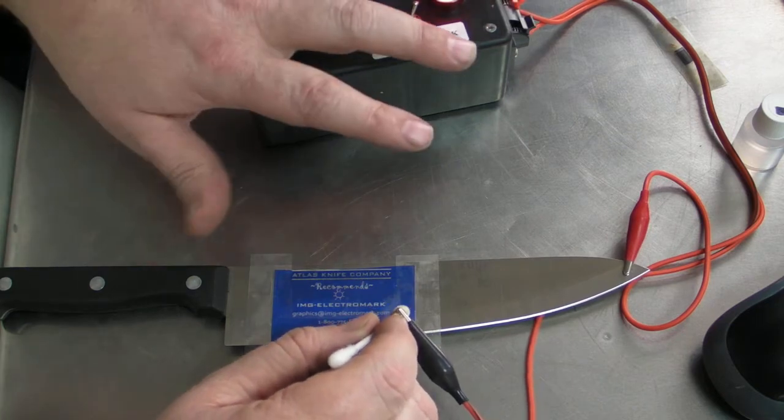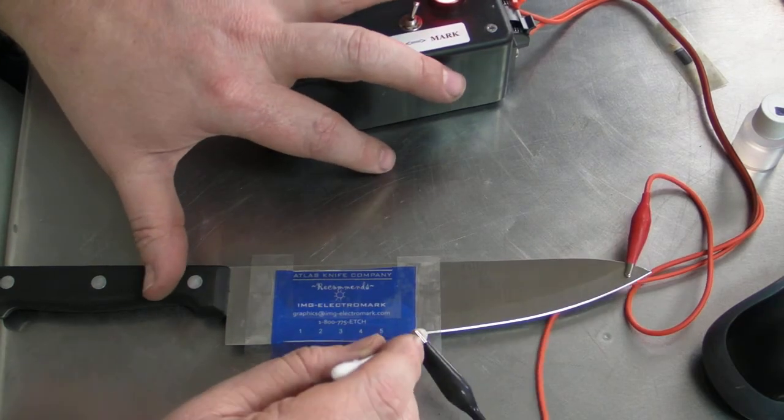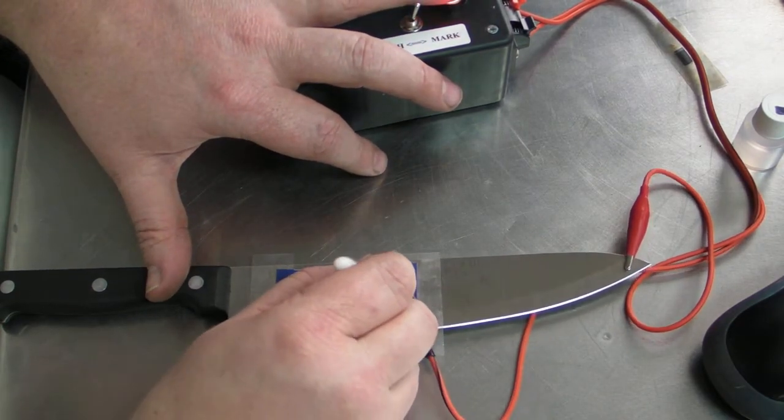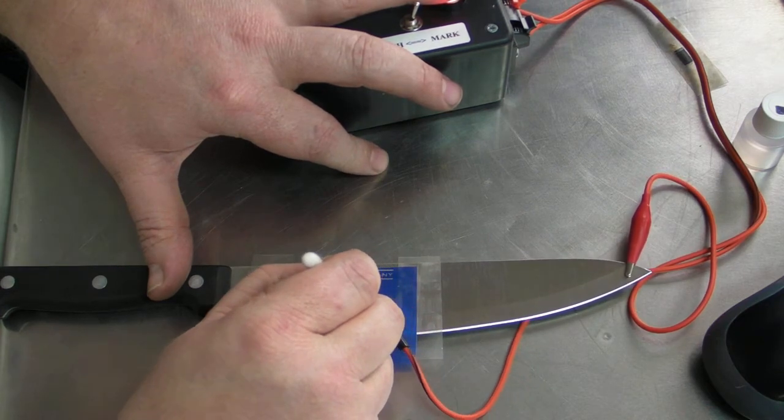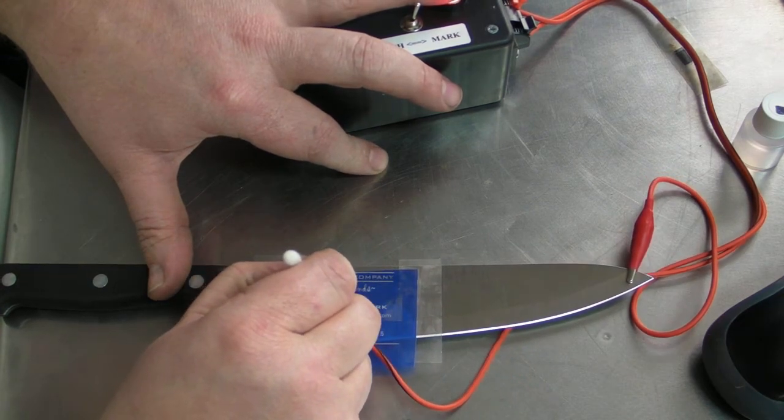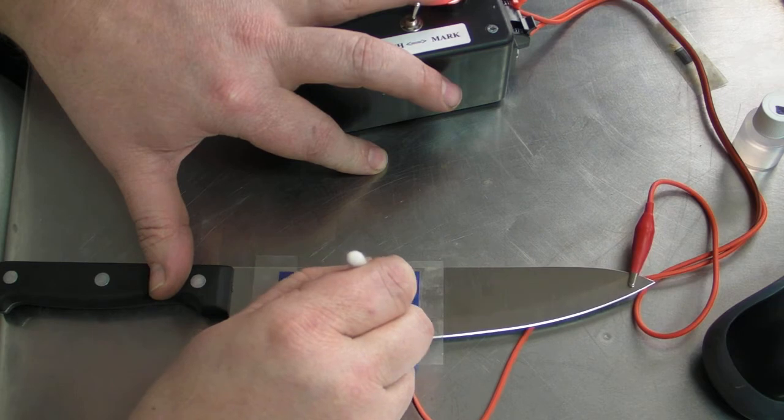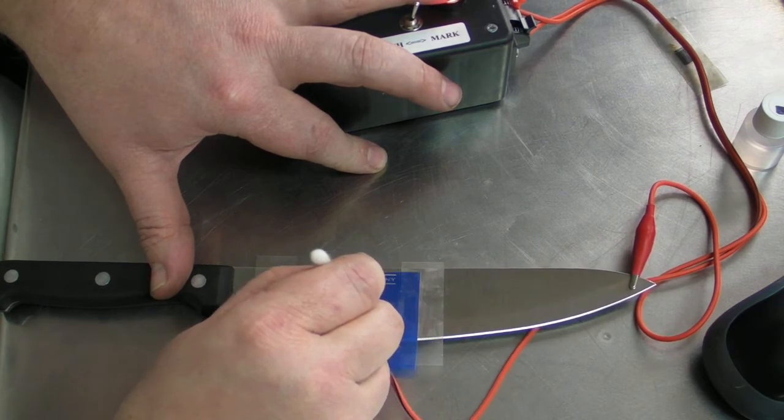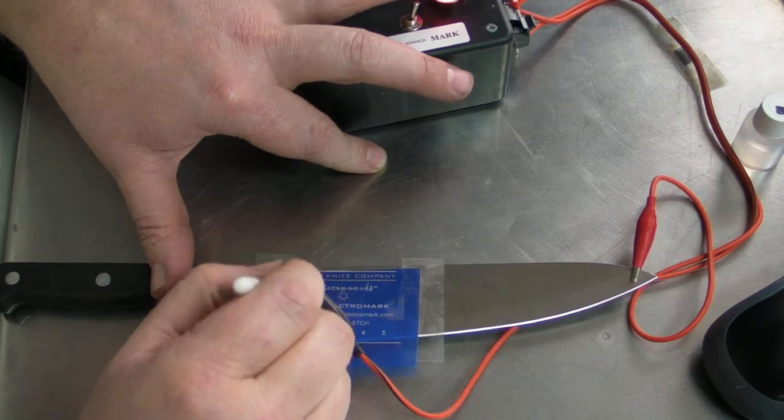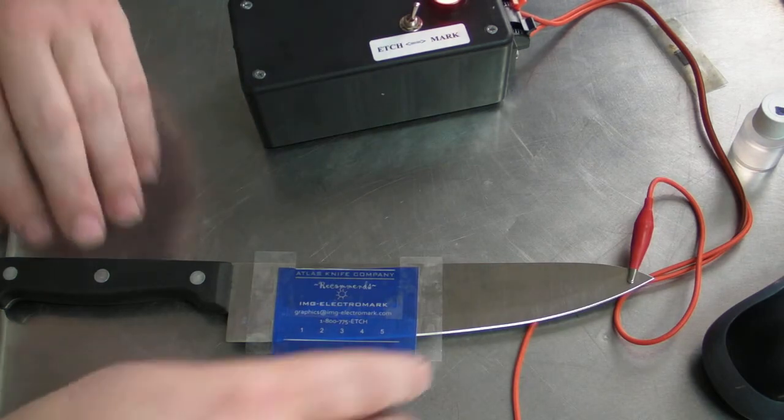I'm going to move it over to Mark. Since it's alternating current, you don't have to keep tapping it. Just go back and forth two or three times. And that is done.